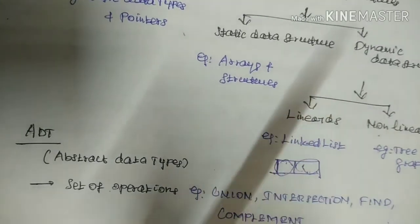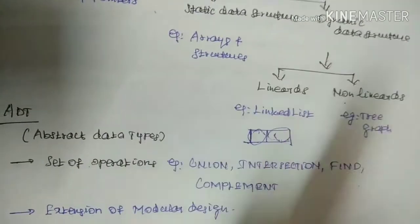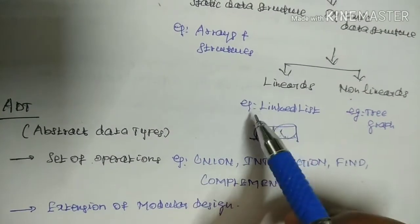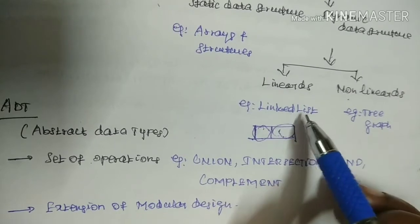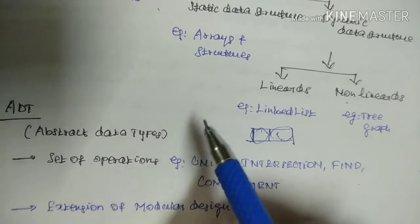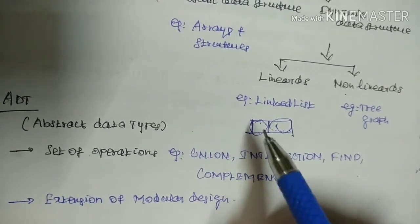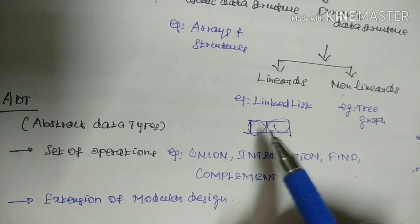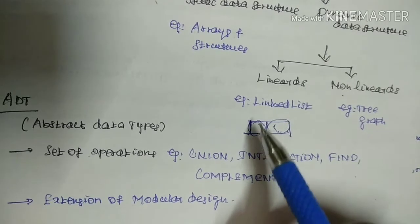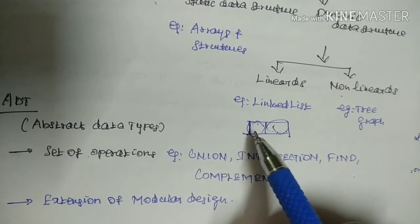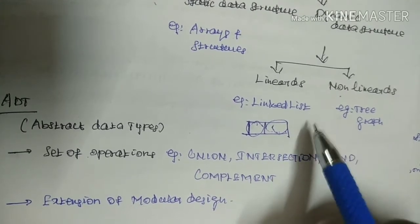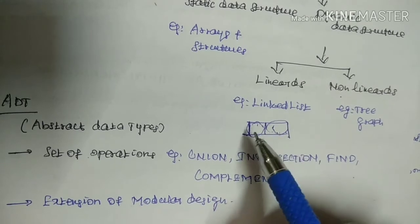Dynamic Data Structure also has two types: Linear Data Structure and Non-Linear Data Structure. An example of Linear Data Structure is Linked List. Linked List is an ordered collection of elements stored using two nodes: a Data Node and a Link Node. The first node stores the data, and the second node stores the address of the next node.